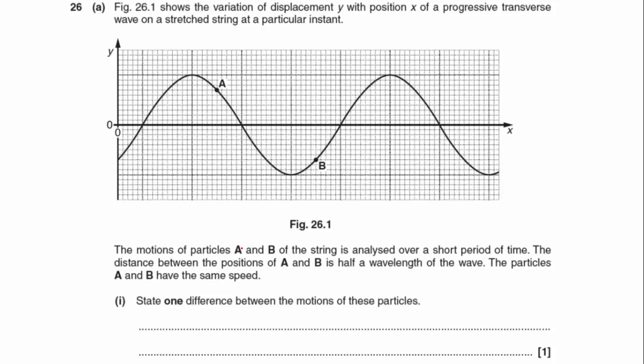The motions of particles A and B on the string is analyzed over a short period of time. The distance between the positions of A and B is half a wavelength of the wave. Particles A and B have the same speed.